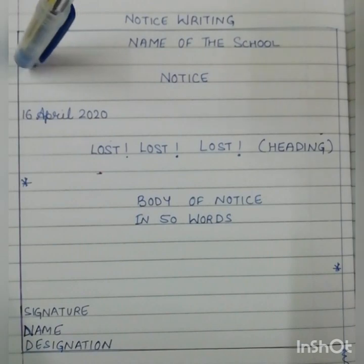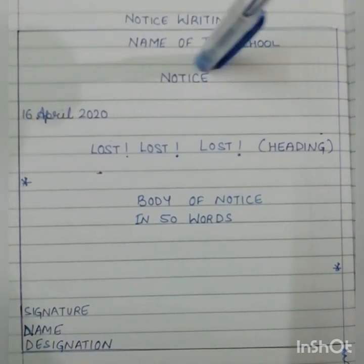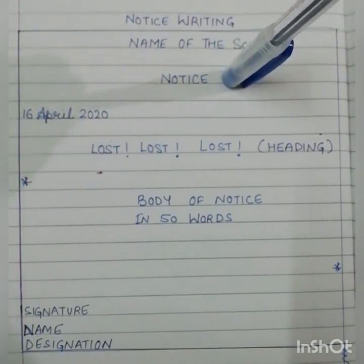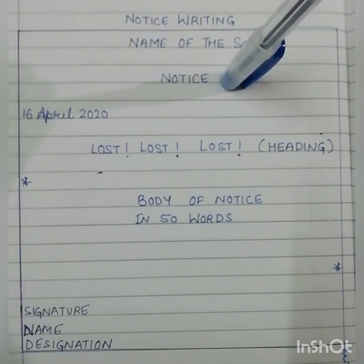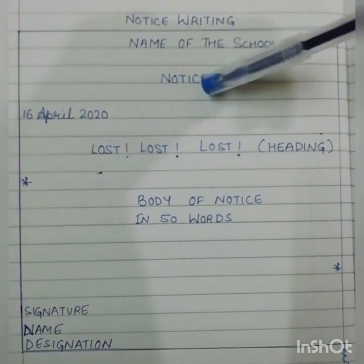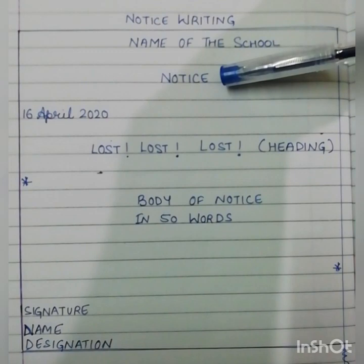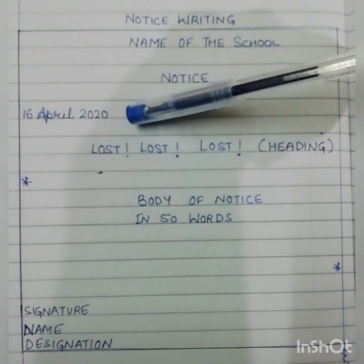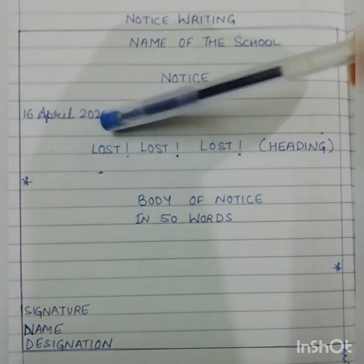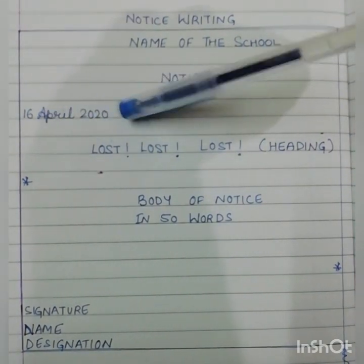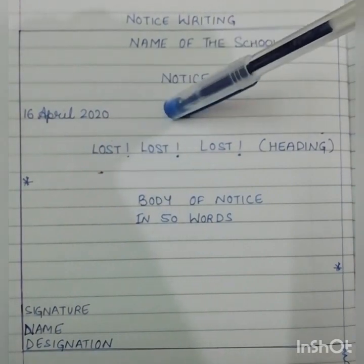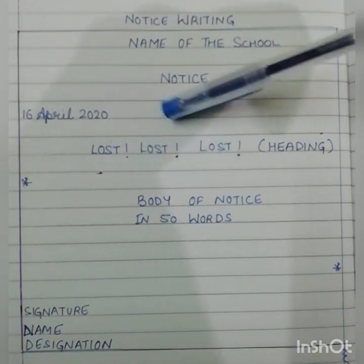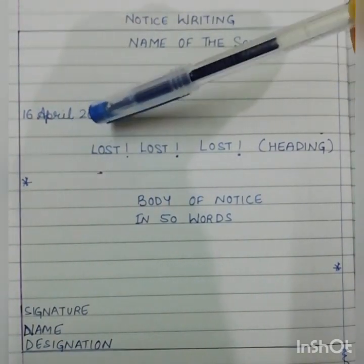Next, you will leave one line. After the name of the school, leave one line and on the third line write the word NOTICE in capital letters. Then again leave one line and on the next line write the date. The date has to be written in a specific format — not 16-4-20, but 16 April 2020.